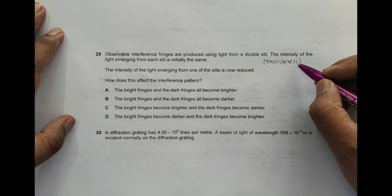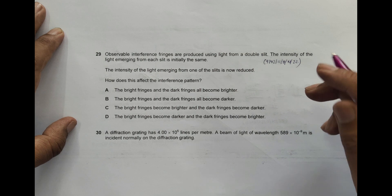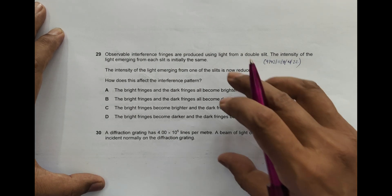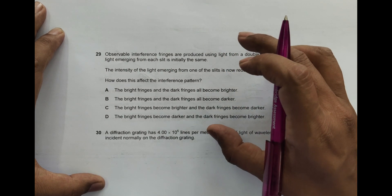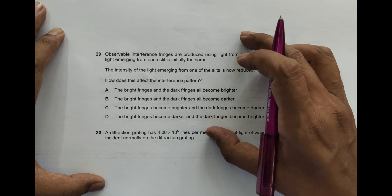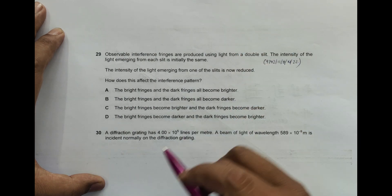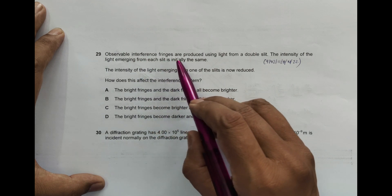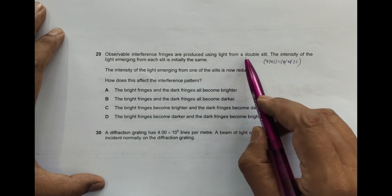Hello folks, this is 2022 October November paper 1, question number 29, which is concerned with the chapter superposition of waves. The topic is interference. It says observable interference fringes are produced using light from a double slit.